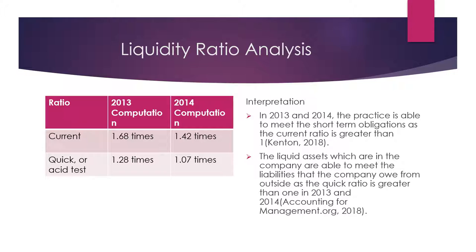Going to the first point, I will analyze the liquidity ratio. I found that in 2013 and 2014, the current ratio is greater than one for both years, which means the practice is able to meet its short-term obligations. The quick assets and liquid assets in the company are also able to meet the liabilities from outside, as the ratio is also greater than one in 2013 and 2014.